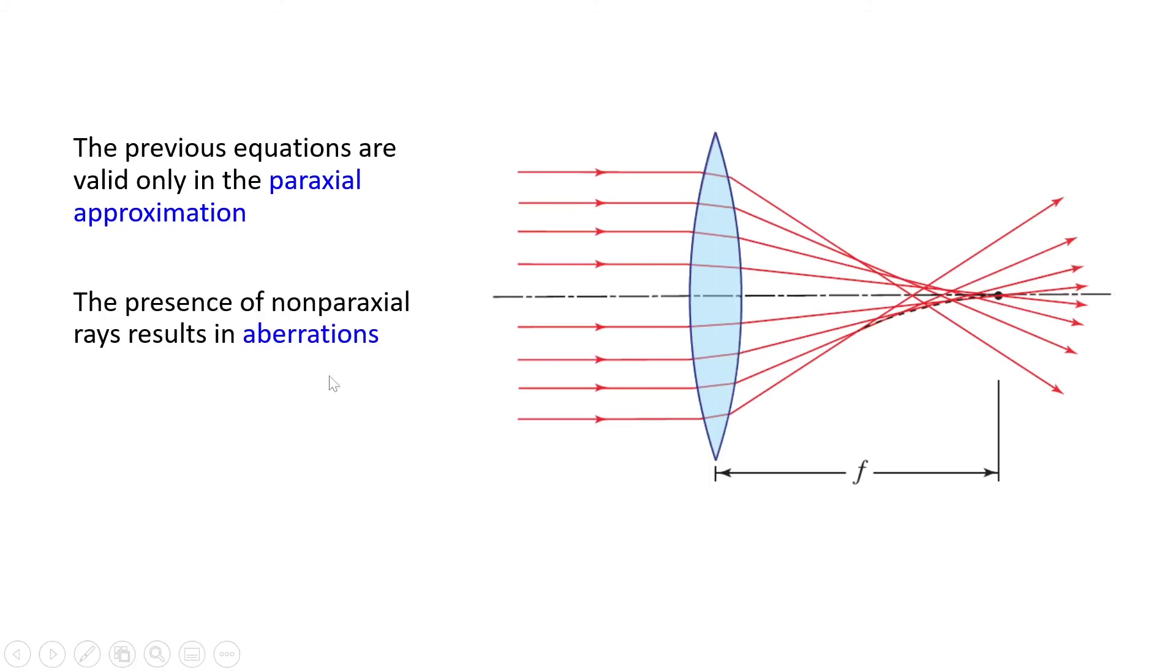The presence of non-paraxial rays results in aberrations. So for example, here we see that all rays are not focused to a single point. And this is aberration.